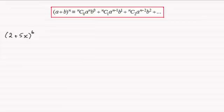So on the assumption then that you're familiar with this formula here, all we have to do is say that this is identical to, and what I'm taking here is a is the 2, b is the 5x, and n is 6.